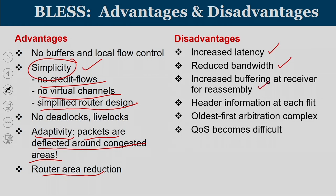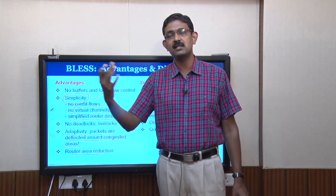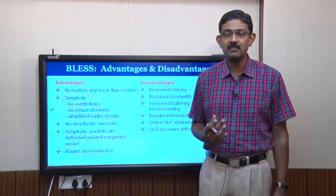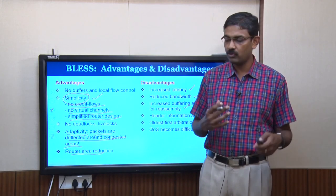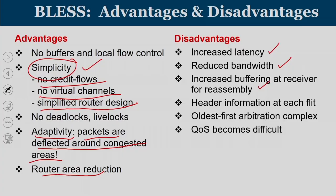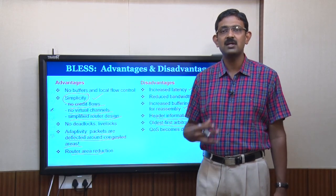BLESS also requires increased buffering at the receiver for reassembly. Since different flits of the same packet are independently routed, some routing information must be available in each flit, and flits may reach the receiver out of order. A reassembly mechanism is needed at the receiver to regroup the packet. Since each flit is independently routed, basic header information must be present in each flit. Finding the oldest flit in the system involves a sorting operation, which is somewhat complex.